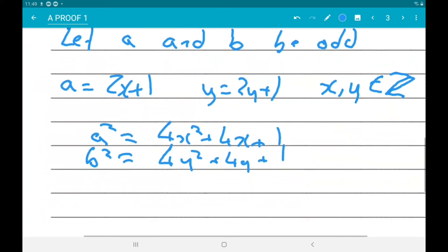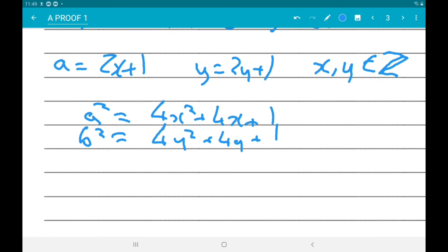So, that then tells us that c squared is 4x squared plus 4x plus 4y squared plus 4y plus 2.